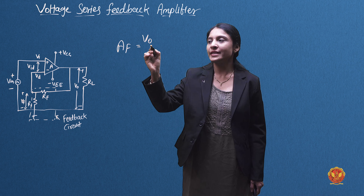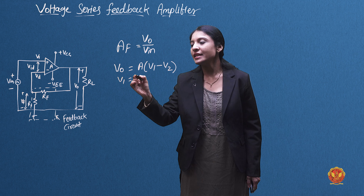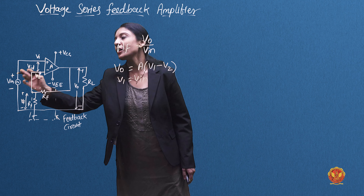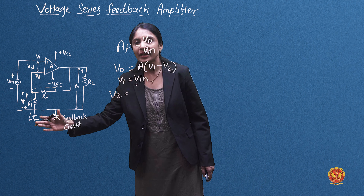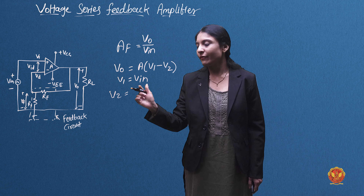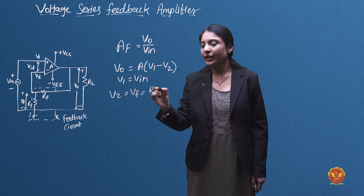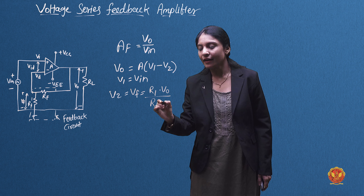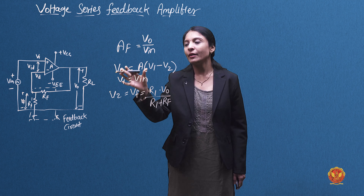We will find AF through the equation: output voltage divided by input voltage. The output voltage equals gain A multiplied by the difference V1 minus V2. Here, V1 is equal to Vin, and V2 is equal to R1 times the output voltage divided by R1 plus RF.